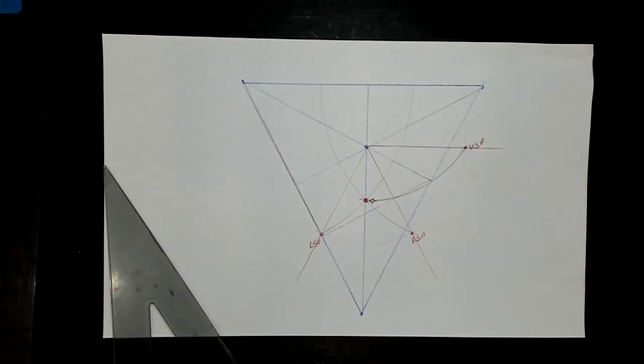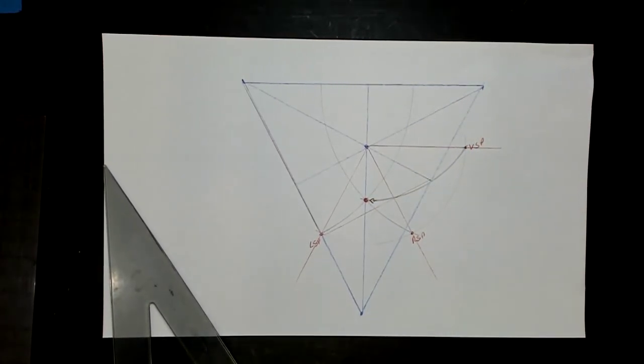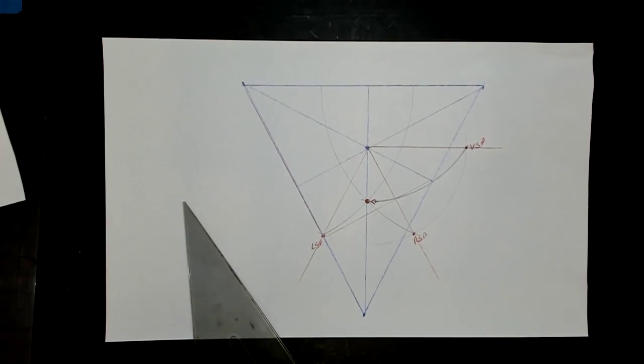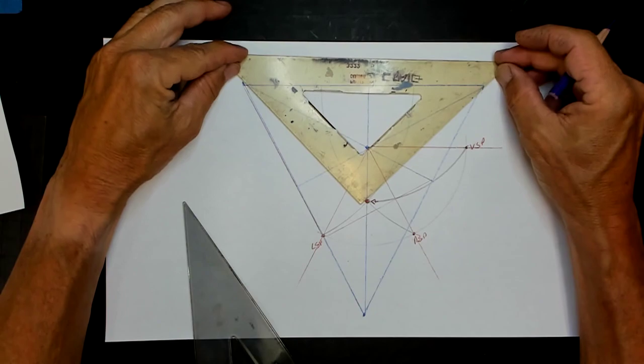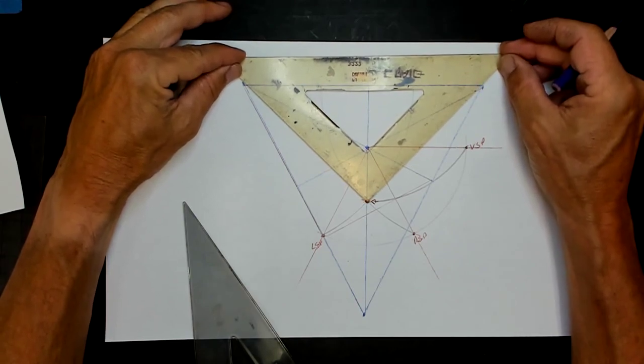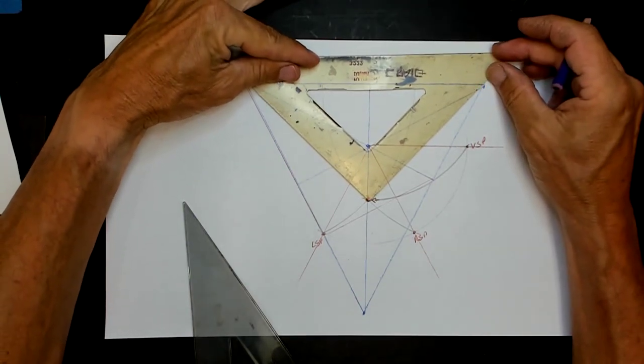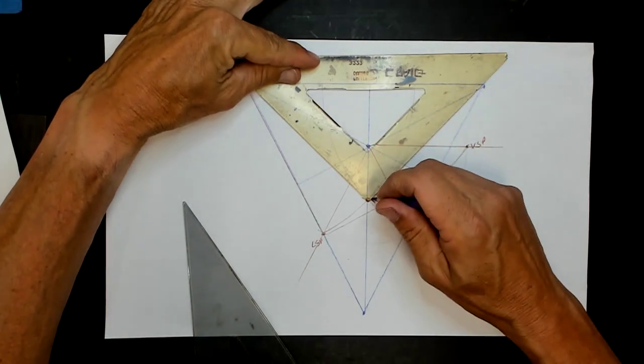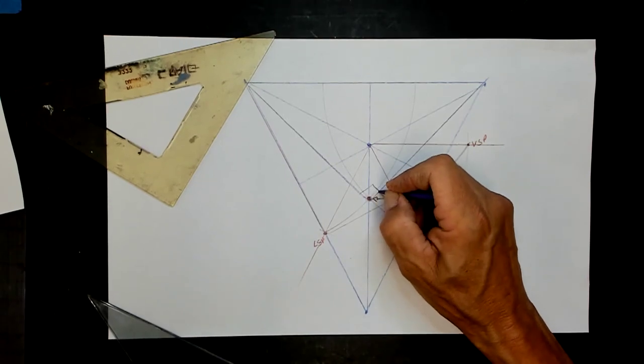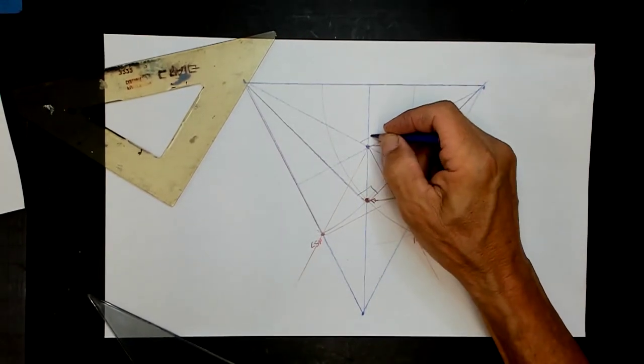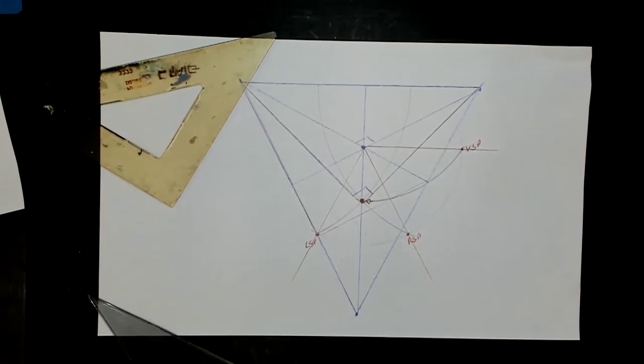This spot is 90 degrees between the left and the right vanishing point. More magic. That is where you get your true angles. Right on that spot. This is a true 90 degrees. That means this up here, that's a perspective 90 degree corner.